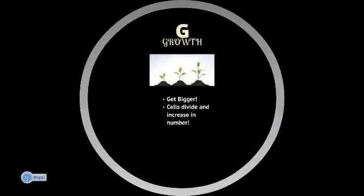G stands for growth. It turns out that living things get bigger. As you start out as a little infant, you're going to grow and grow into a big adult. Things just get bigger. Cells divide.